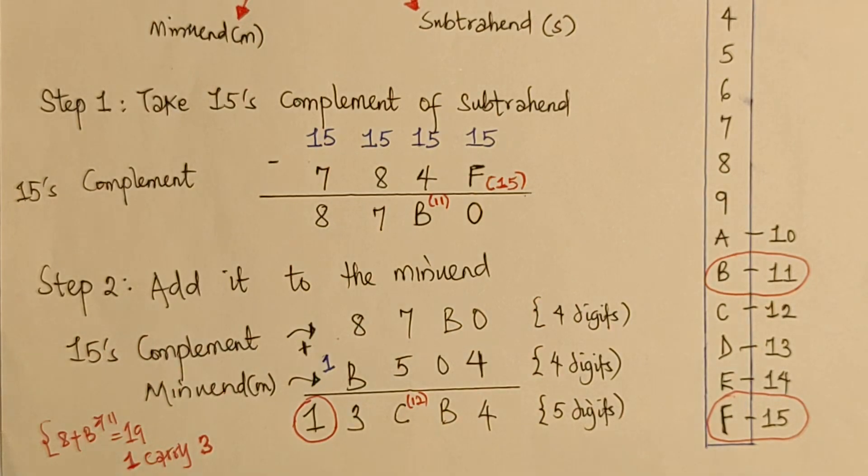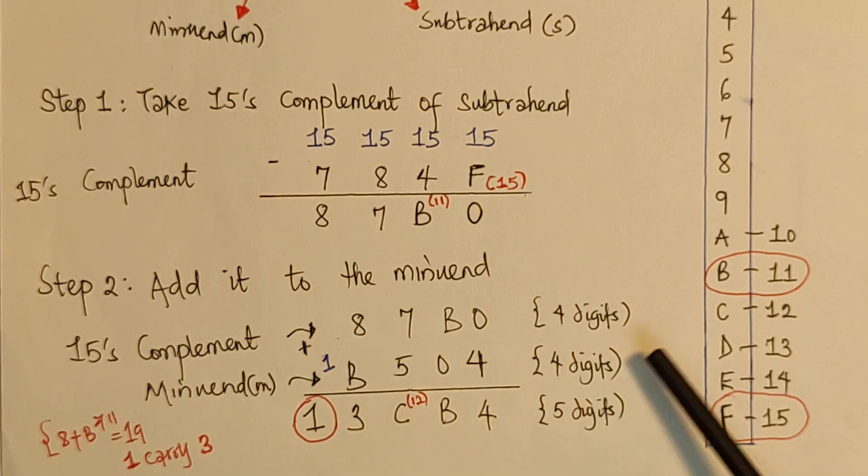Now, let me say something quickly before we move to step 3, so that you can quickly understand. So, in this case, how do we know when carry exists? Because you're only going to count the number of digits in this case. So, in this case, we have 4 digits, 4 digits, and 5 digits. So, this tells us that there is a generation of carry. So, having known that, let's move to step 3.